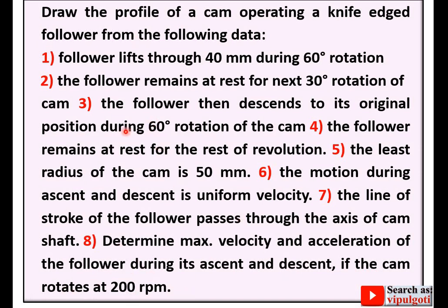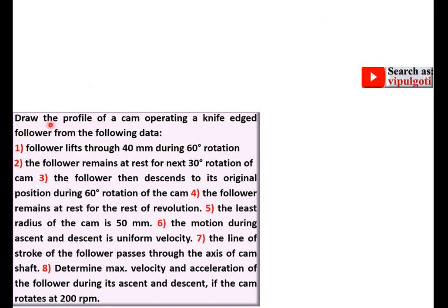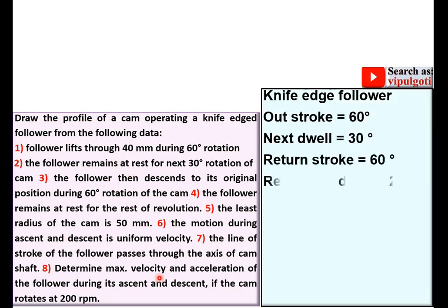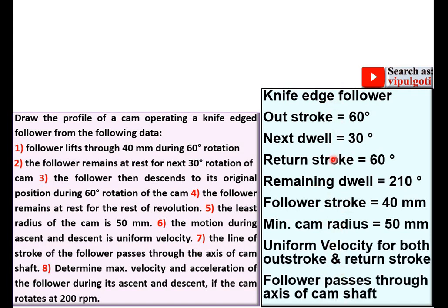In this problem, first we will draw the displacement diagram, then the cam profile, and at last we will discuss the calculation. The remaining dwell angle is 210 degrees, which is very simple to calculate: 360 minus 60 minus 30 minus 60 equals 210 degrees.